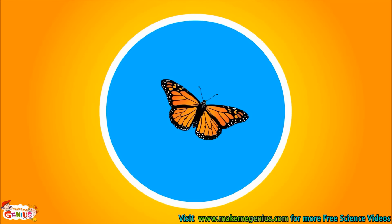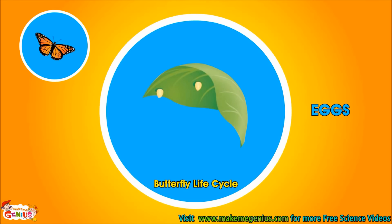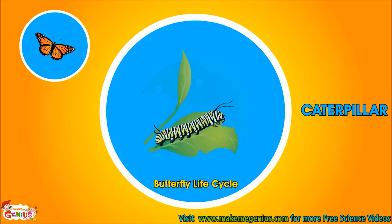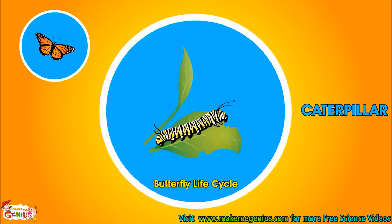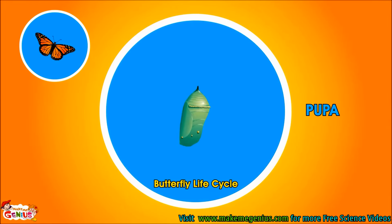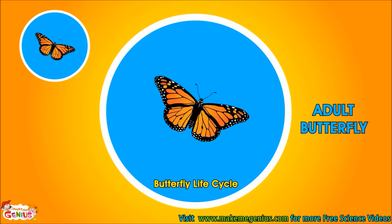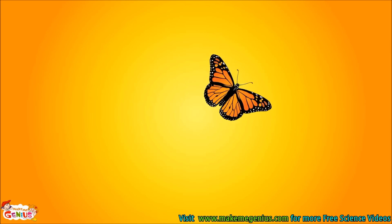Butterfly also has a little complicated life cycle. They hatch from eggs. At the initial stage they are small larvae, or caterpillar. They live inside the cocoon and develop and grow inside it by eating food. They become pupa. Slowly wings develop, and when they come out of the cocoon, they come out as adult butterflies.